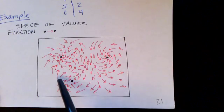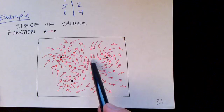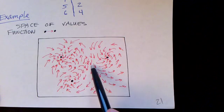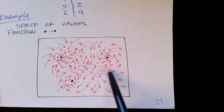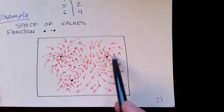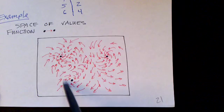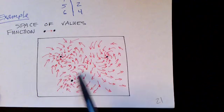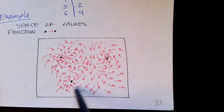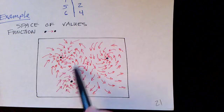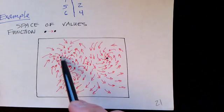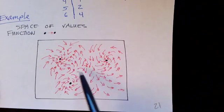When we start somewhere, for example here, it's not clear which attractor we'll be drawn to, which fixed point we'll end up in. It might be this one or it might be this one, or maybe this one over here somehow. But that's the idea of fixed points.